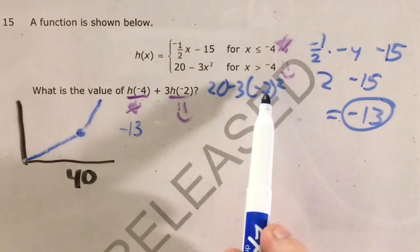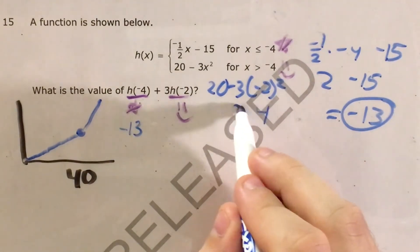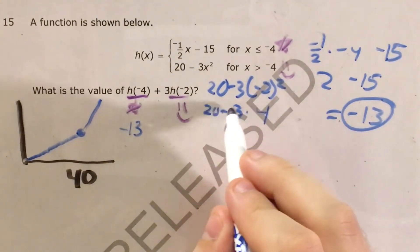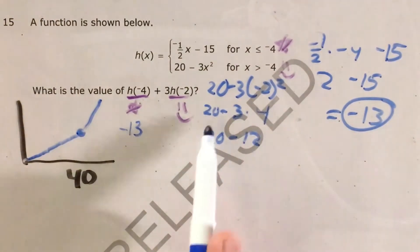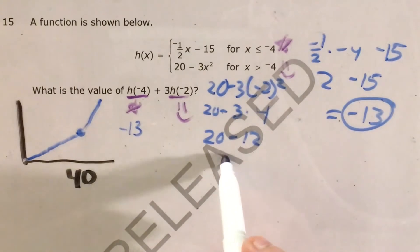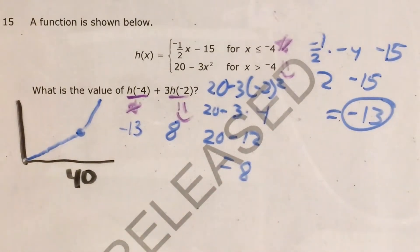Alright, so first I evaluate my exponent. Negative 2 times negative 2 is positive 4. 3 times 4 would give me 12. So 20 minus 3 times 4 is 20 minus 12, which is 8. So h of negative 2 is 8.